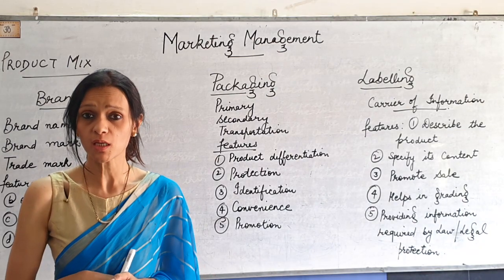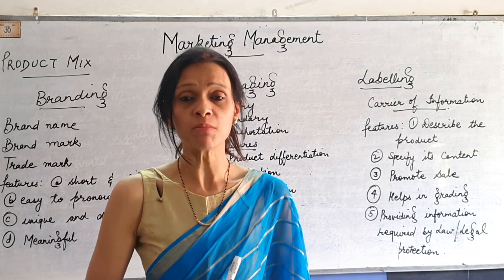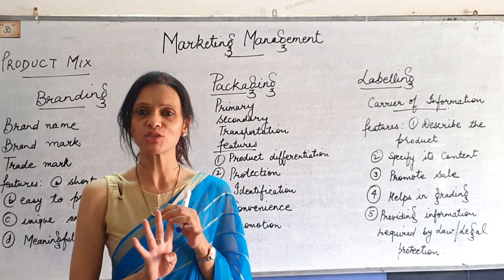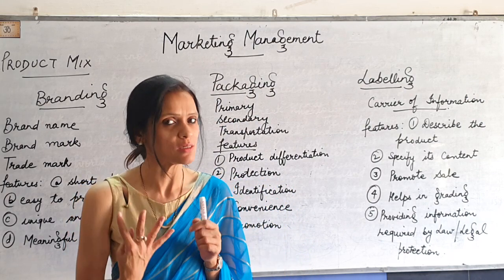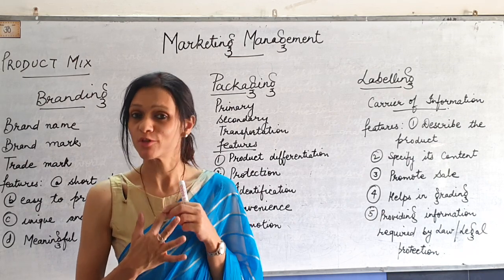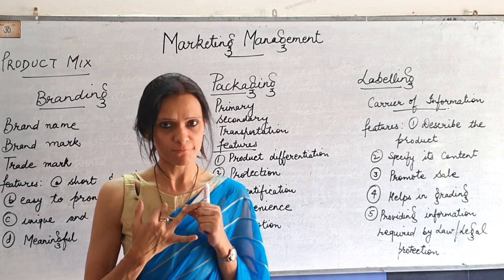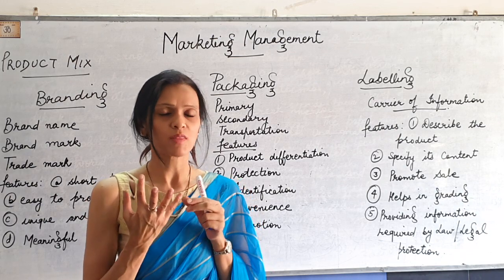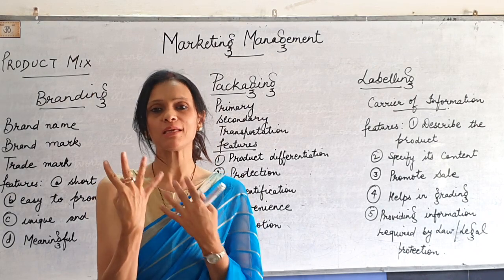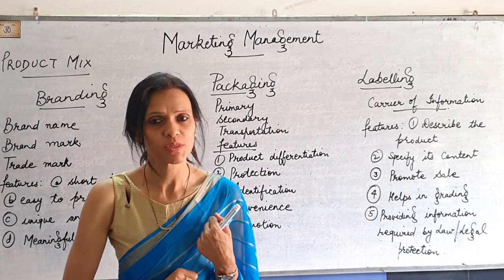From where did this product mix concept come? It has come from when we were doing the marketing mix — the theory of 4 P's. We have learned the theory of 4 P's. P for product, P for price, P for place or physical distribution, and the last P is for promotion. So these 4 P's are the elements of marketing mix.